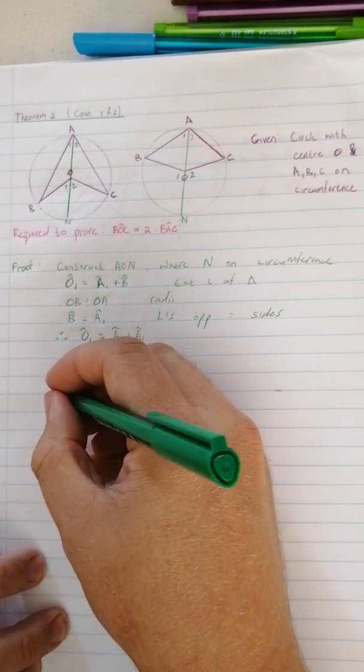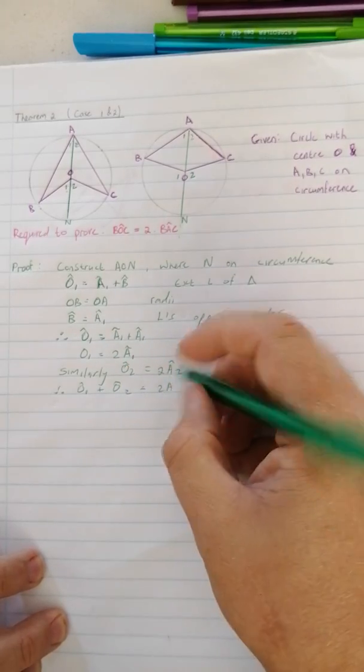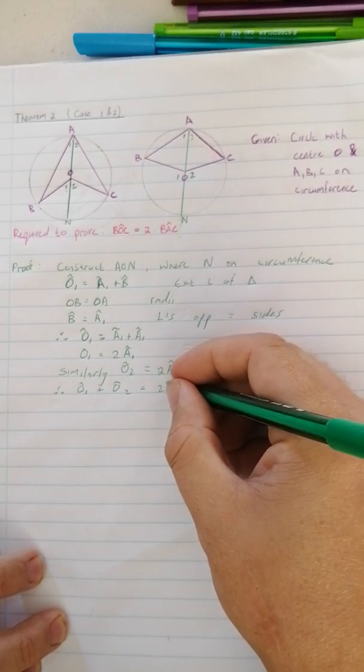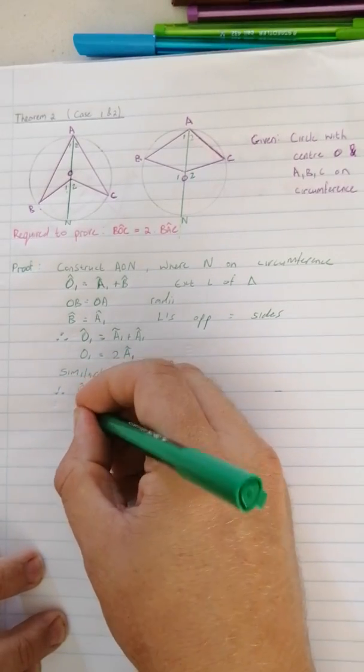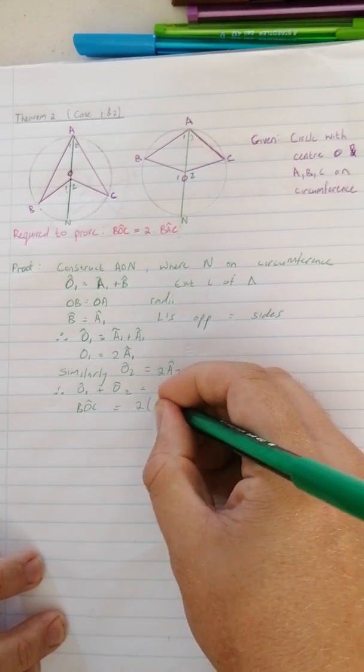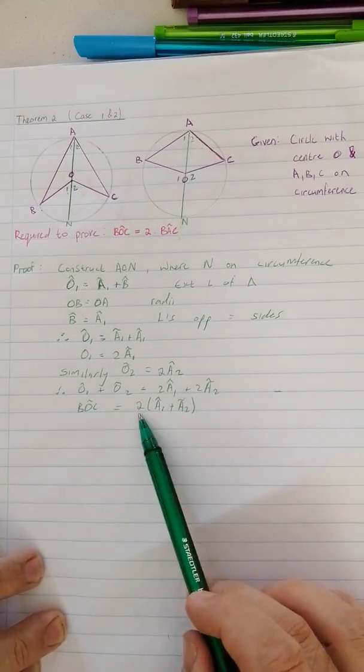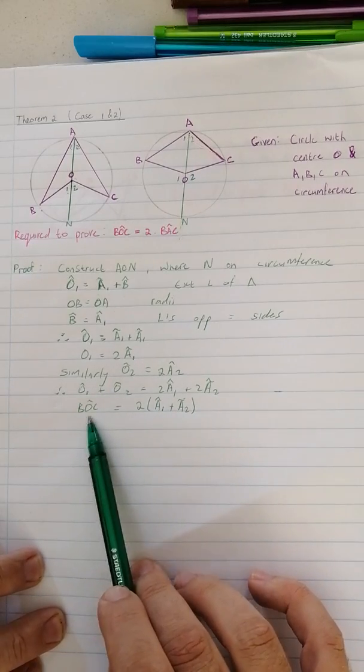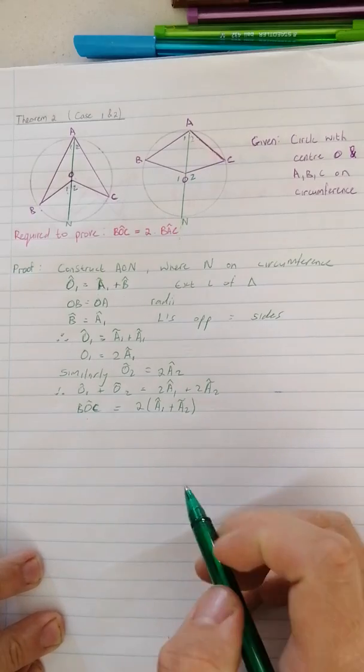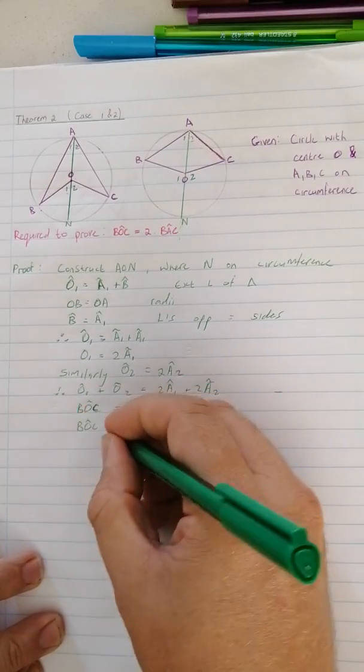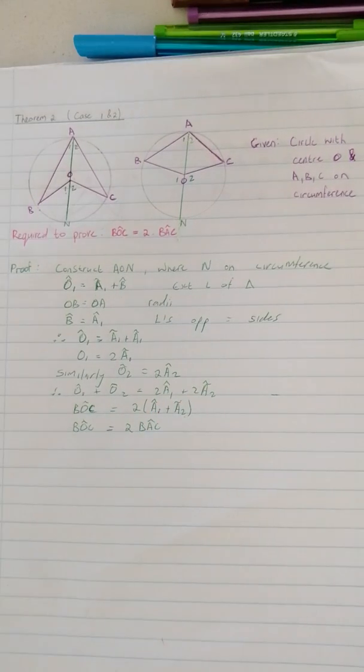And now we can say therefore O1 plus O2 equals 2A. So I just quickly did that for you. Take out a common factor of 2. We know that O1 plus O2 is the same as angle BOC, so I just changed that to angle BOC. And then I took out a common factor of the 2 that is common there. And then we've got A1 plus A2. And now we can say BOC is equal to twice A1 plus A2, which we know is the same as angle BAC. And from there you can see that we've just proved the theorem.